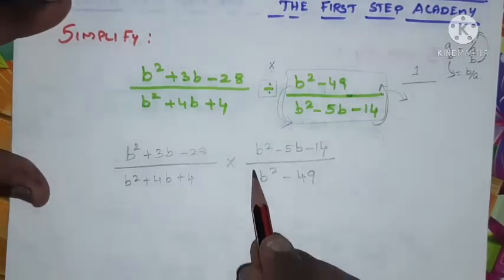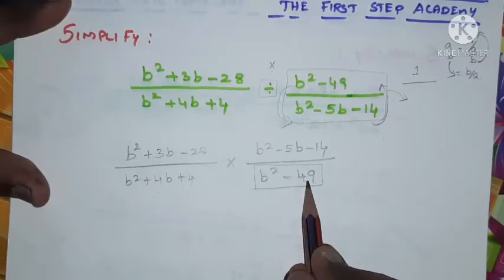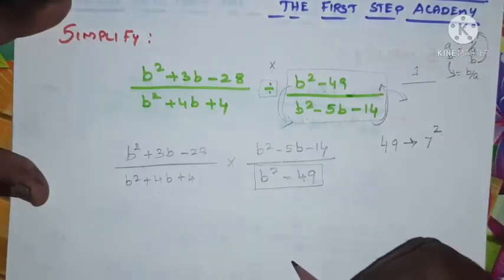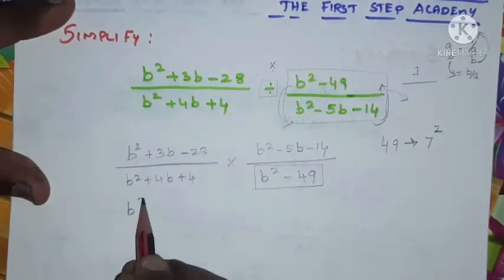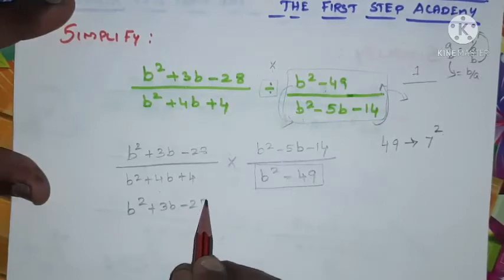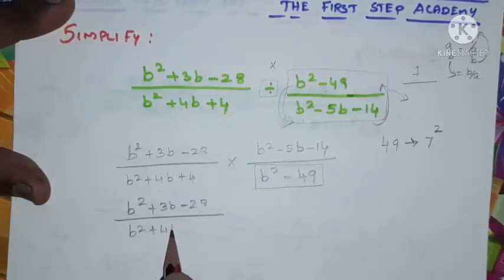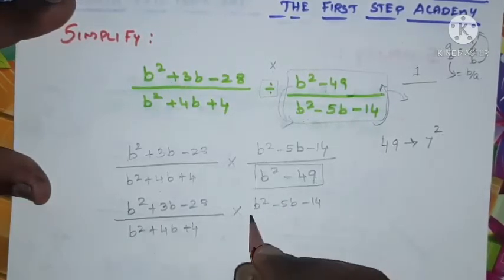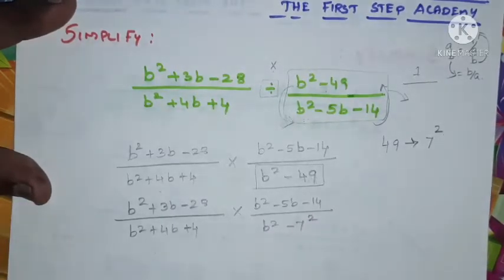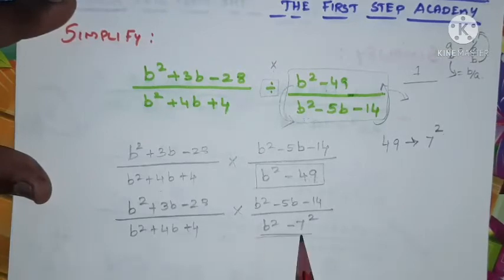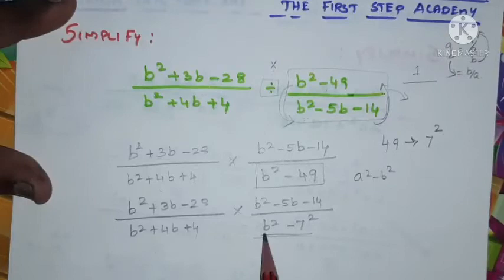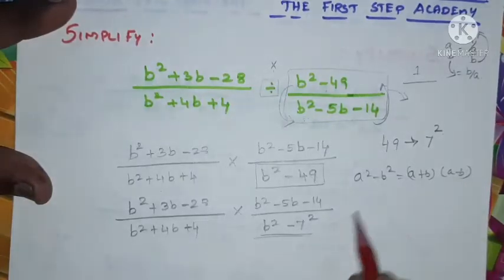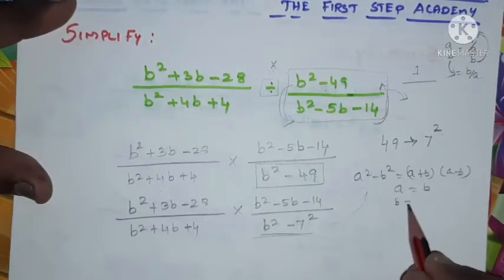Looking at the denominator term b squared minus 49: 49 can be written as 7 squared, so this becomes b squared minus 7 squared. This is in the form a squared minus b squared, which equals a plus b times a minus b, where here a equals b and b equals 7.